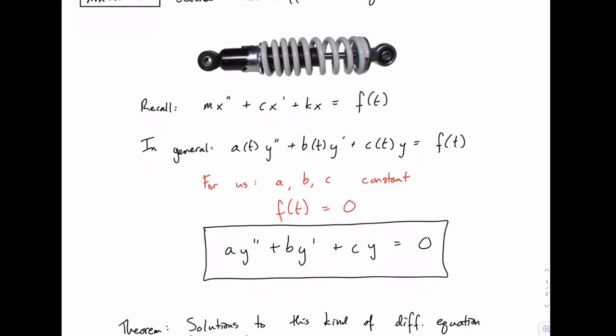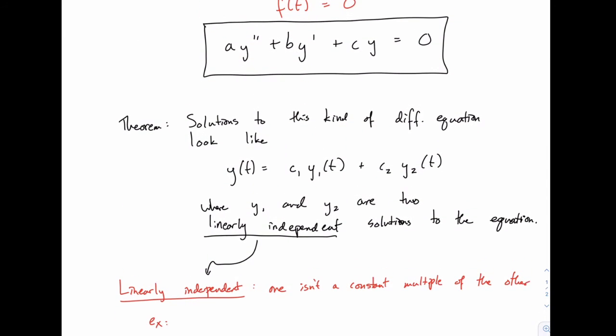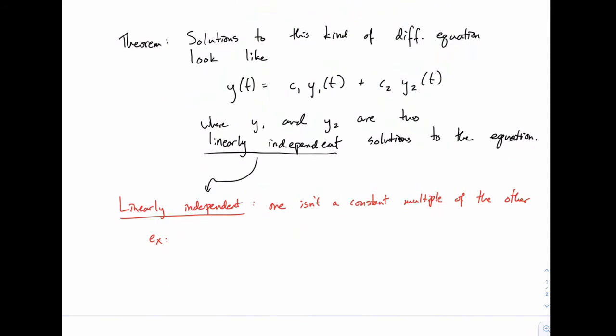Now it turns out that solutions to this kind of equation fit a standard form, and we won't prove this in any way, this is something we'll just take for granted and use it as we find solutions, but it turns out that when we solve a second-order differential equation, we actually get two solutions. So we're going to get two answers for Y, and we'll label them Y1 and Y2.